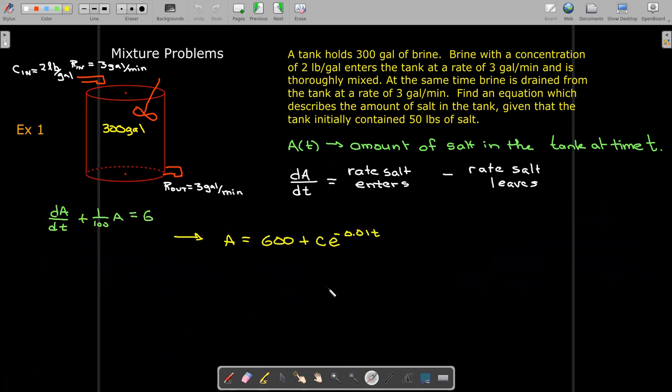And we'll divide both sides by e to the power of 0.01t. And so now the next thing we need to do is impose our initial condition to find the value of the parameter c. And so we know that at time 0, we have 50 pounds of salt in the tank. So do some algebra. So get our constant value of negative 550. And now we've got our solution.